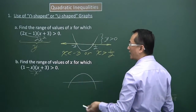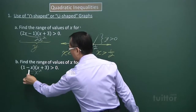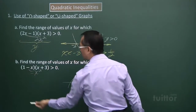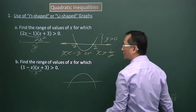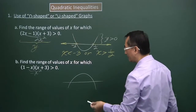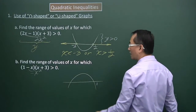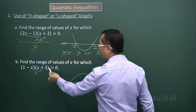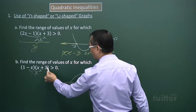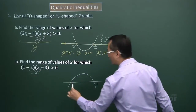When I equate the first factor to zero I get X equals one, so that will be marked here. For the second factor, equated to zero I get X equals negative three.